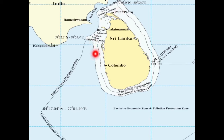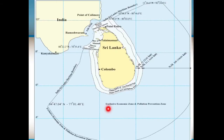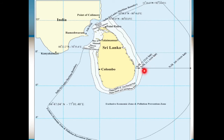This is the contiguous zone, which goes for 24 nautical miles from the territorial sea limit. This is the exclusive economic zone and pollution prevention zone, located beyond the contiguous zone up to 200 nautical miles.